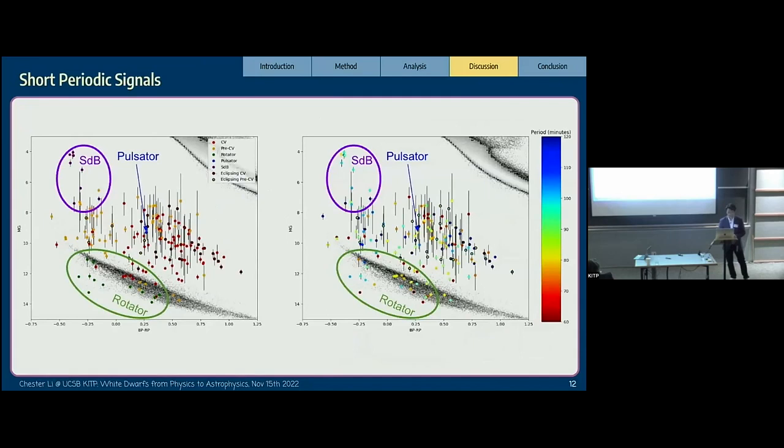This is one of our final products. We plotted all the periodic signals we found on this HR diagram. Different colors represent different types of stars: CVs, pre-CVs, rotators, pulsators. We also labeled some eclipsing systems we found with a black border, mostly eclipsing CVs and pre-CVs. On the right panel, we color-coded the data points using their periods, with red being the shortest period at 60 minutes and blue being the longest at 120 minutes.